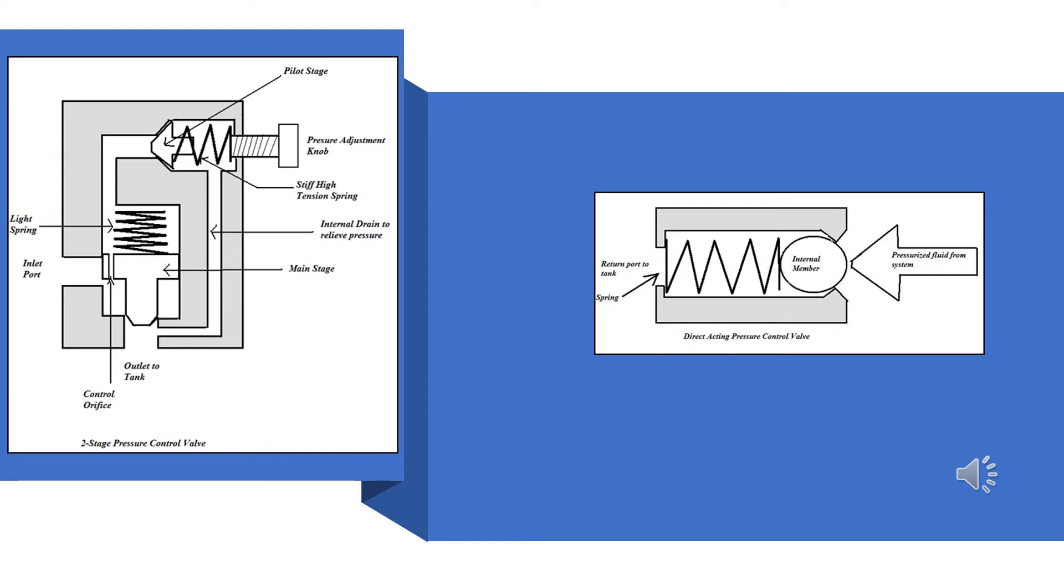So, when the dart closes, the oil will flow back through the orifice, and the pressures on each side will balance out, and eventually, the spring closes the main stage. And this is how the valve cycles.